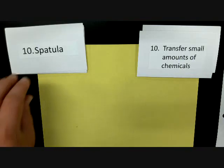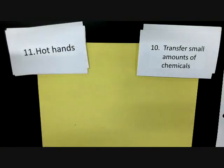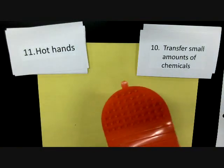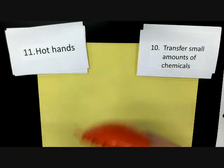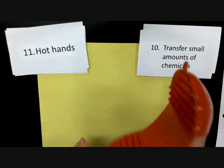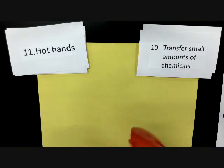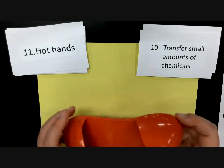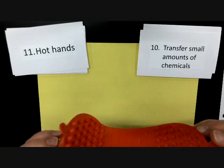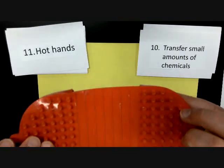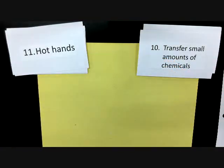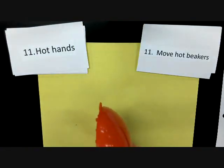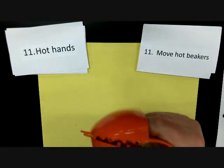The next one has a fun name — they're called hot hands. They're just a way for you to pick up hot pieces of equipment. They're made out of silicone, like a hot pad. Hot hands are used to move hot beakers around.